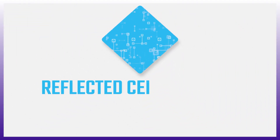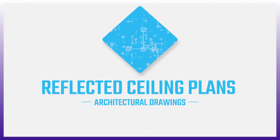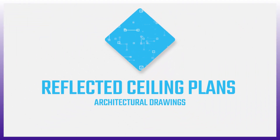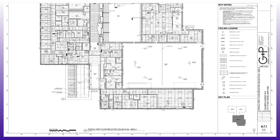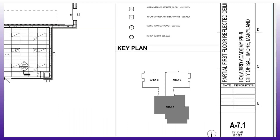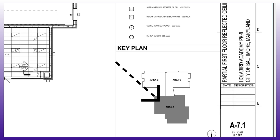Thanks for clicking on the video. It's Smith in the building, and today we are going to be looking at reflected ceiling plans. To kick it off, we're starting at the partial first floor plan, Area A for this academy. You can see here, if you didn't know about a key plan, this is a full building, and this is the area that we're looking at, shaded right there.